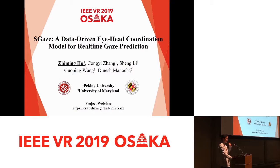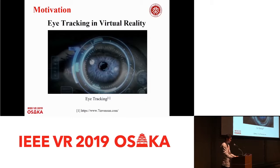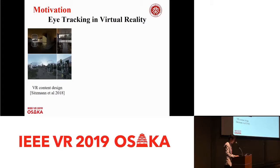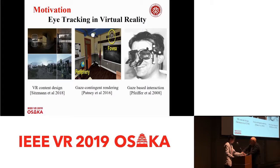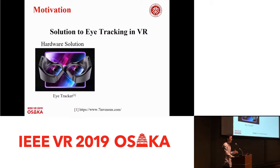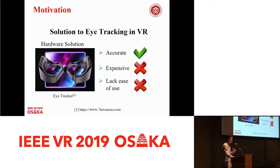Let's start with the motivation of our work. Nowadays, eye-tracking technology has gained more and more importance in the area of virtual reality. It can be applied to content design, gaze-contingent rendering, eye movement-based interaction, and so on. However, when it comes to eye-tracking solutions in virtual reality, right now we only have a hardware solution which requires a device called an eye-tracker. It's accurate, but it's expensive and it lacks ease of use. So our idea is to propose a software solution that tracks gaze position without using any special devices. This is the motivation of our work.